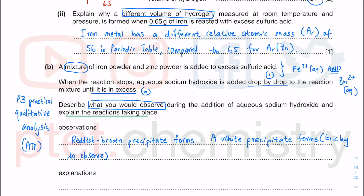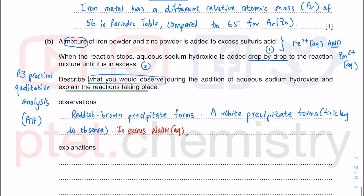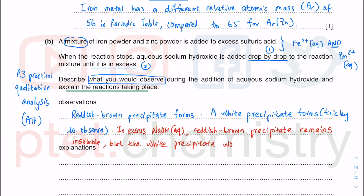The white precipitate is tricky to see because it is against the colored solid background of the reddish-brown precipitate. In excess NaOH, the zinc hydroxide would dissolve, but the reddish-brown precipitate would not dissolve — it remains insoluble in excess NaOH. The white precipitate would have dissolved, so you could say some of the precipitate dissolved, because it might be hard to see the white precipitate.